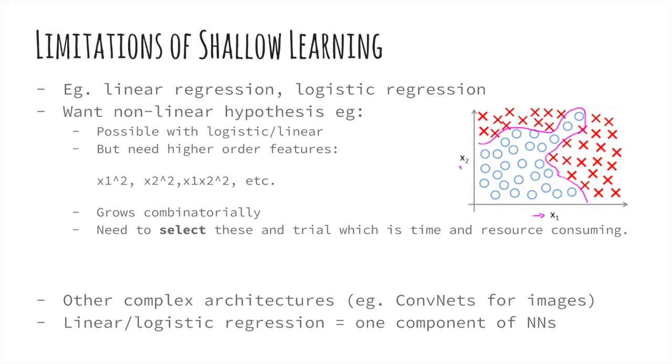Nowadays, we call neural networks and variants on traditional neural networks deep learning, because they are generally composed of stacks of shallow learning algorithms like linear regression or logistic regression.